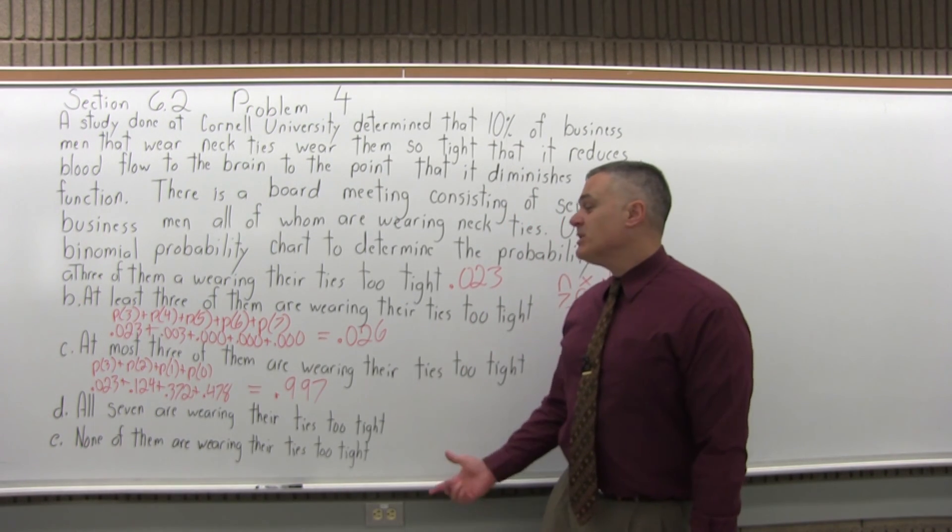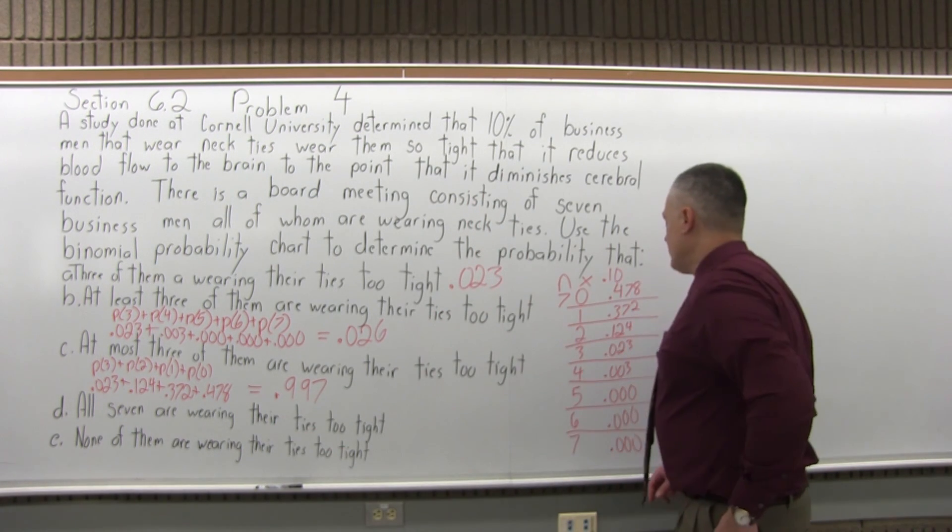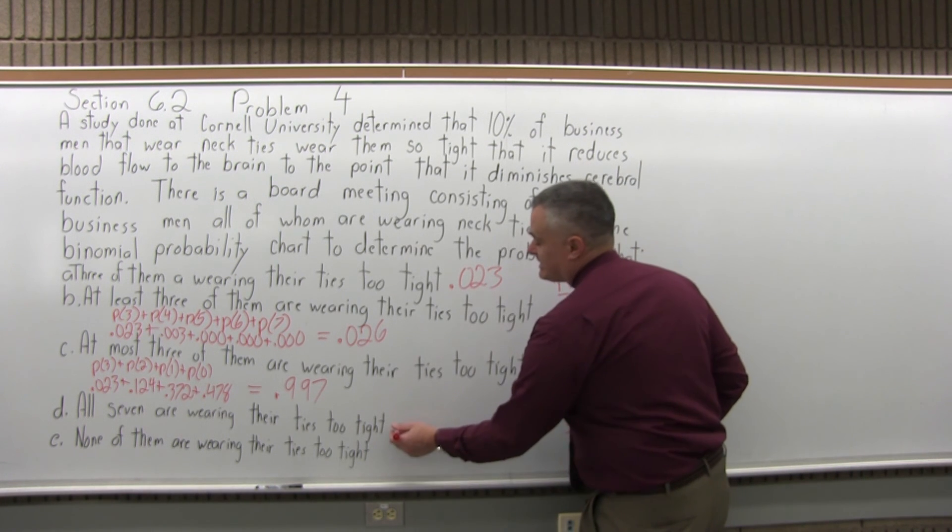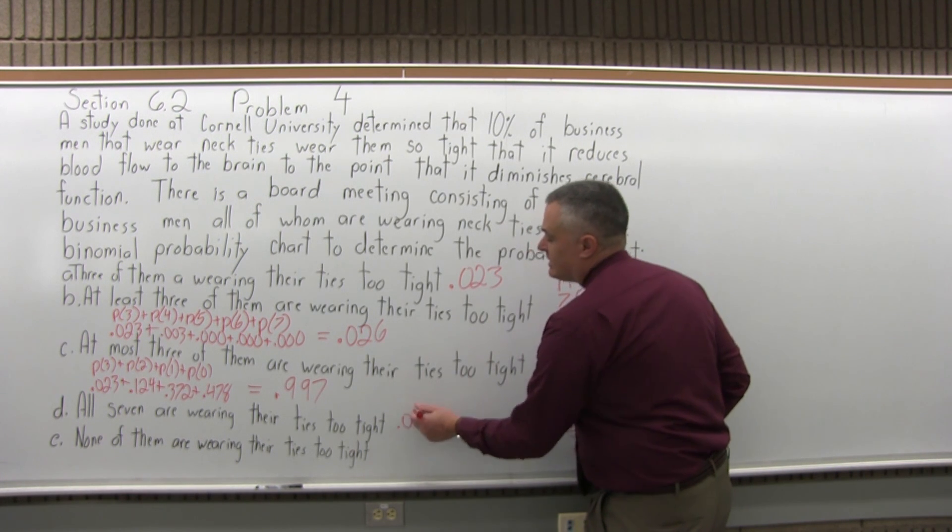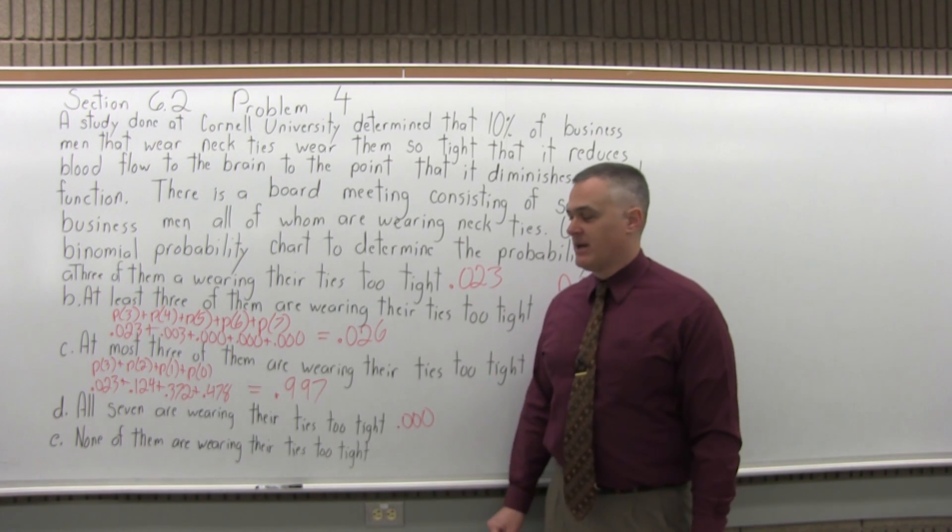And then D, what's the probability that all seven are wearing their tie too tight? For all seven, we'd go to the part of the chart next to seven, and we can see that it's essentially zero. It's close to zero. It's super unlikely, getting close to impossible, that they'd all have their tie on too tight.